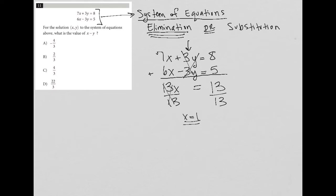There's my x value. Now, once I have my x value, I can plug that x value into either of these original equations. I'm going to just take the top one. I have 7x plus 3y equals 8. I'm going to replace x with 1. So 7 times 1 plus 3y equals 8. So 7 plus 3y equals 8. Subtract 7 from both sides.